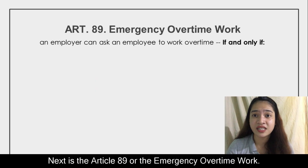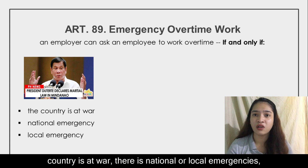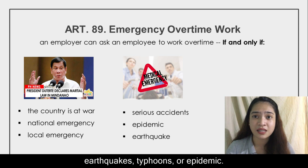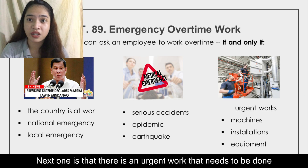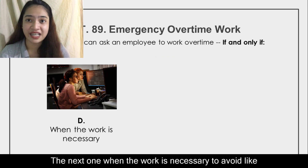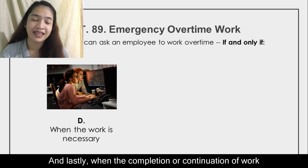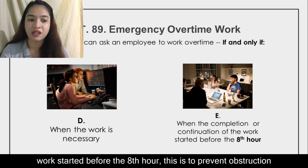Article 89, or emergency overtime work, states that an employer can ask an employee to work overtime if the country is at war, there is a national or local emergency, or there are serious problems such as accidents or calamities like floods, earthquakes, typhoons, or an endemic. Other grounds include urgent work that needs to be done, such as installation of machines and equipment for the company; when work is necessary to avoid loss of perishable goods or financial losses for the company; and when the completion or continuation of work was started before the 8th hour, to prevent obstructions to the company or employer.